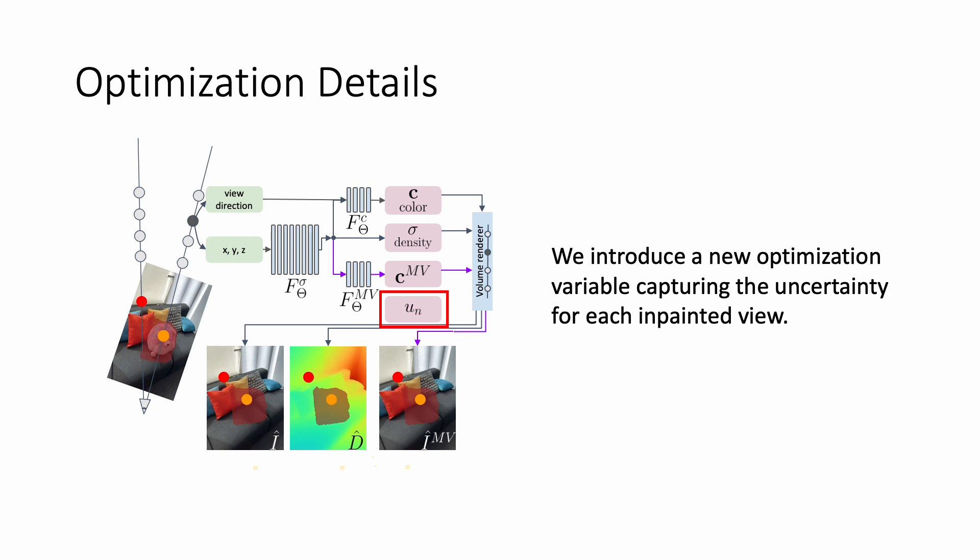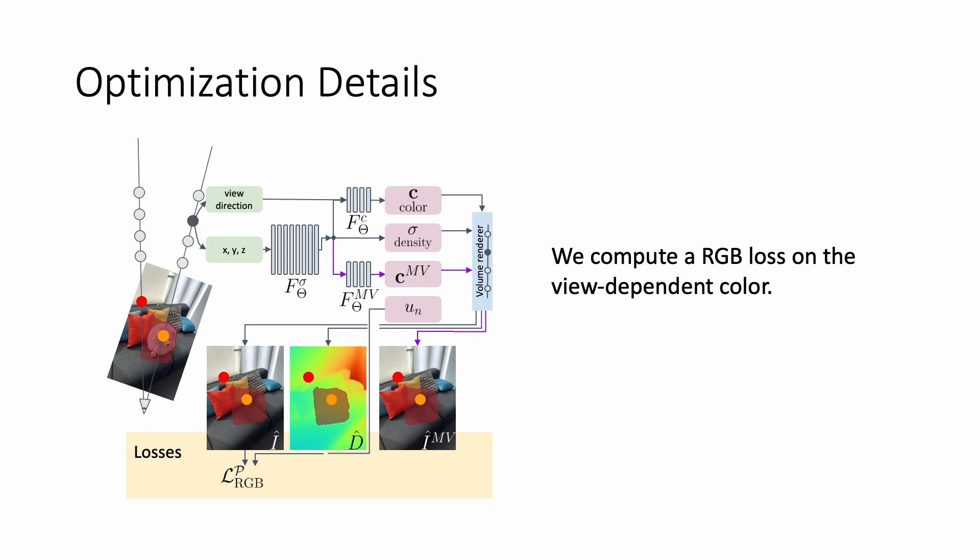The first loss we compute is the standard mean squared error loss on the rendered RGB image. Inside the mask, this loss is weighted by the uncertainty variable. Thus, the uncertainty variable attenuates the loss for views where uncertainty is high.